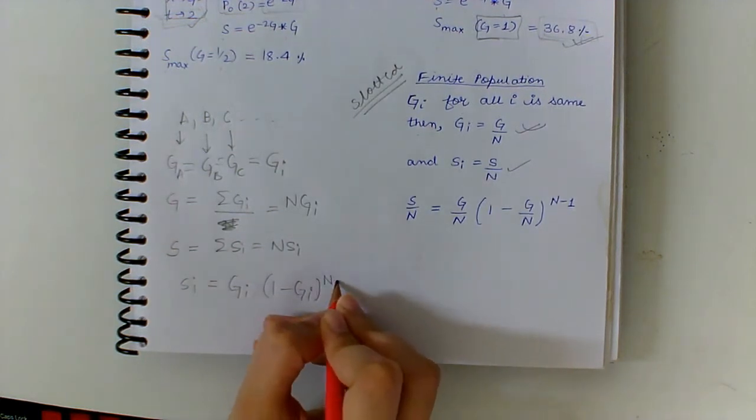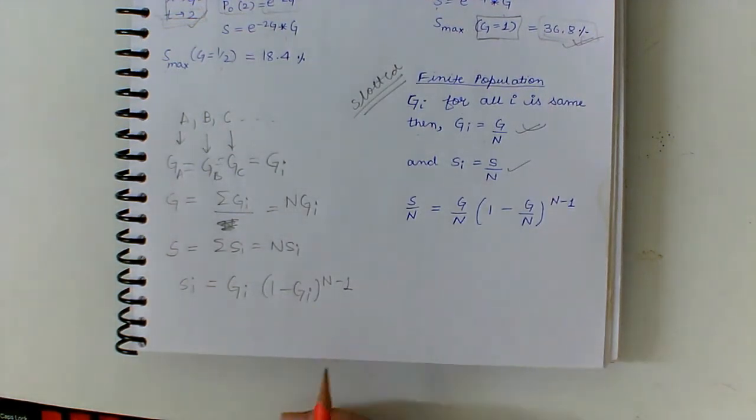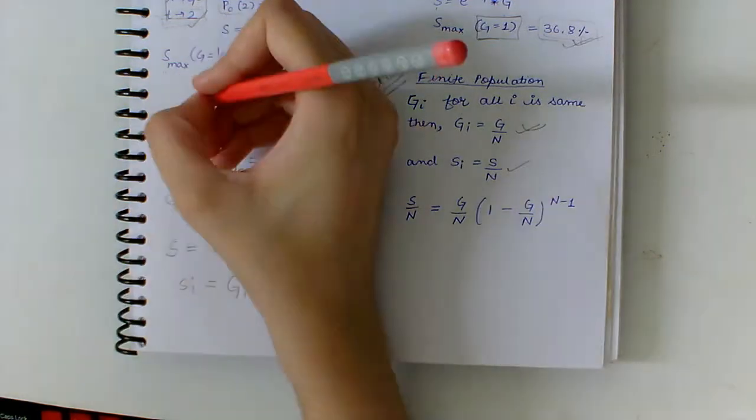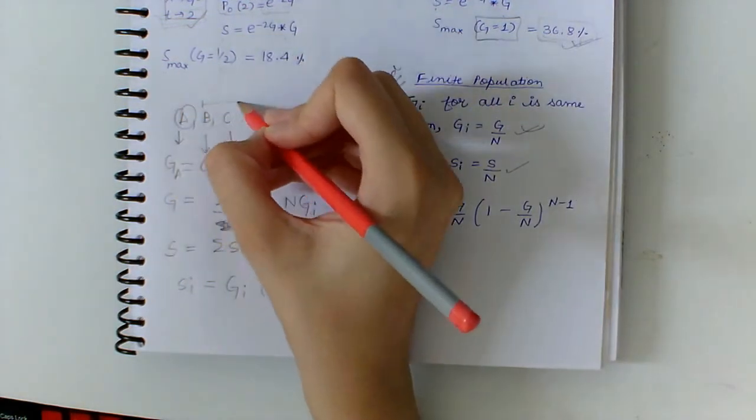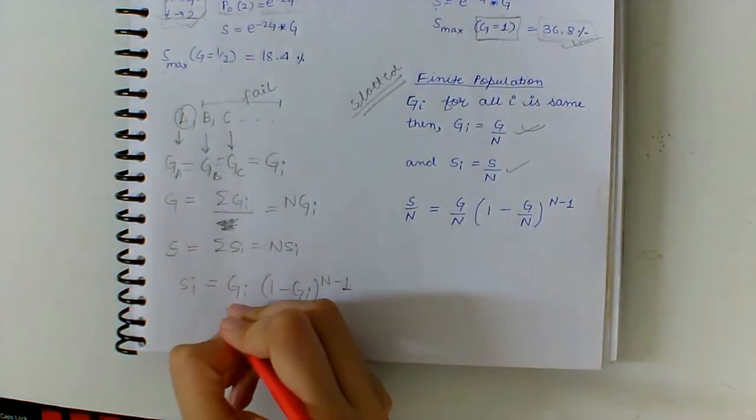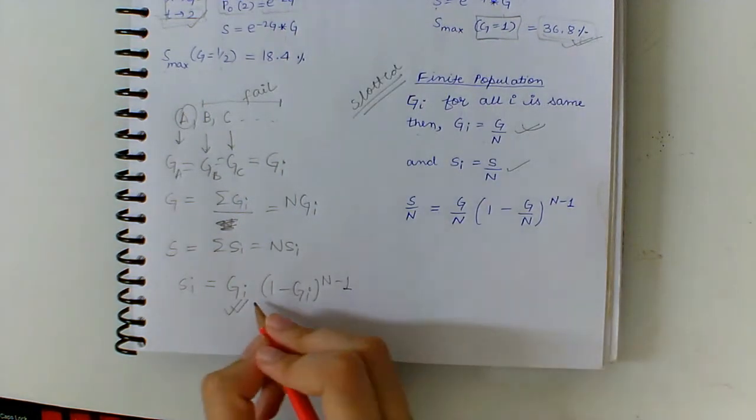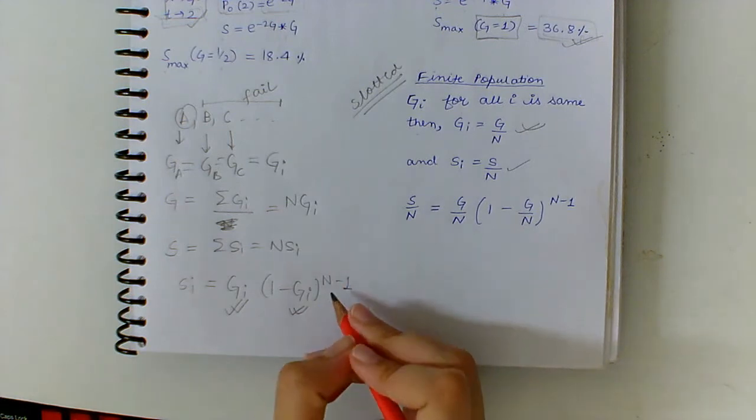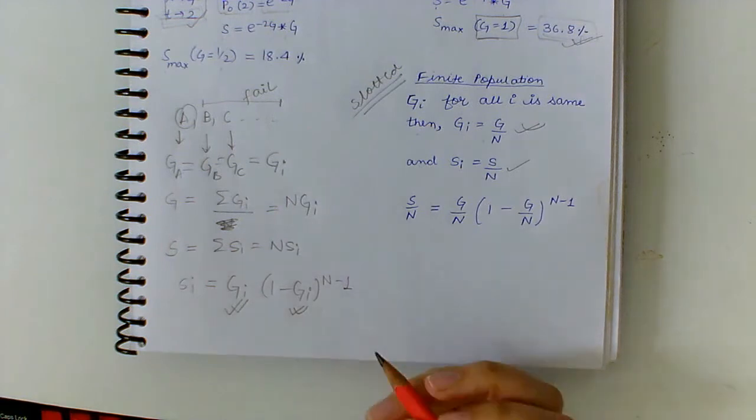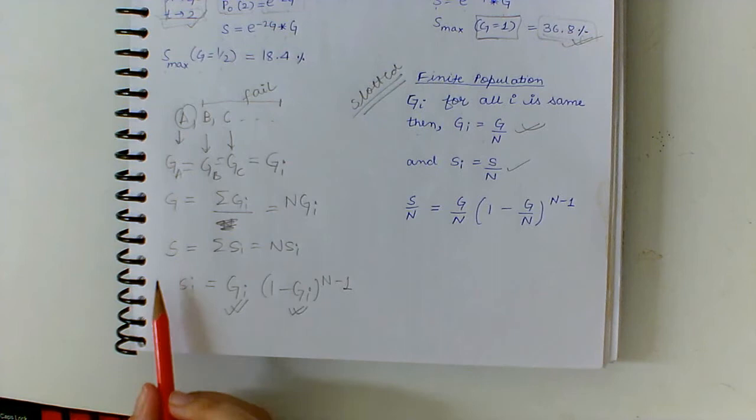So we know that si equals gi times (1 minus gi) to the power (n minus 1). And where did this come from? We know that for A to be successful, we need everyone else to fail. So this is when A is successful, and this is when n minus 1, like everyone except A, fails.